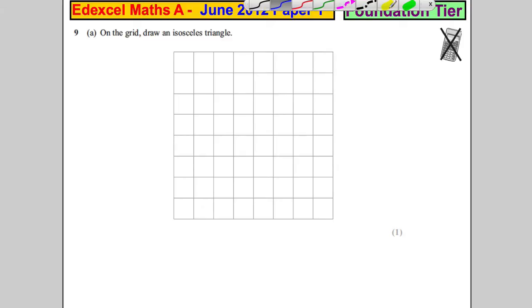On the grid, draw an isosceles triangle for question 9. Remember the types of triangle you need to know. We've done this before, but the first one is that type.